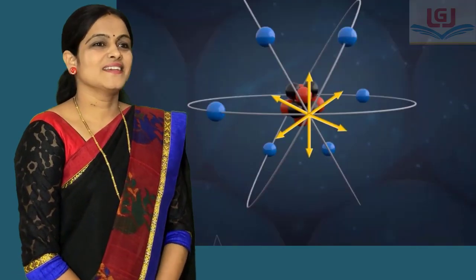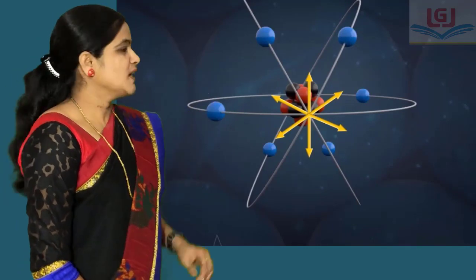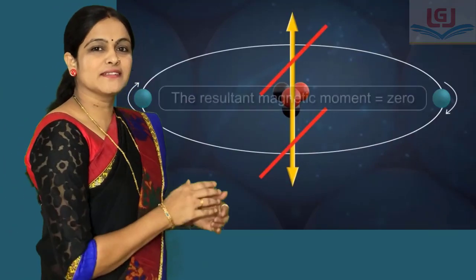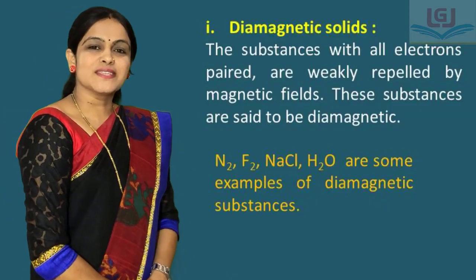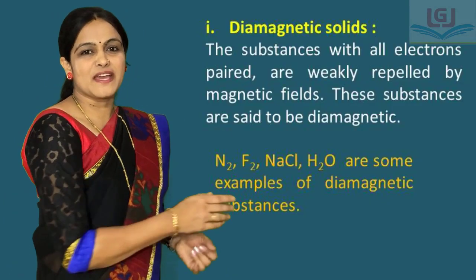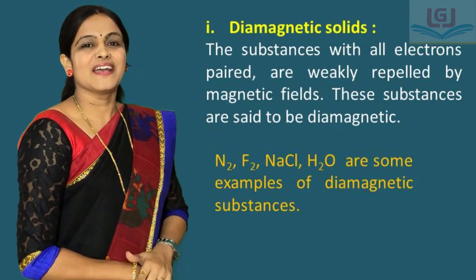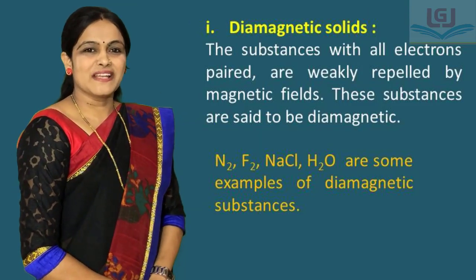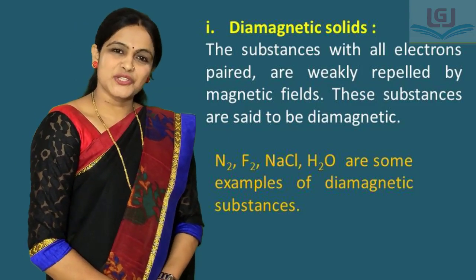First, we discuss diamagnetic solids. In diamagnetic solids, all electrons are paired. Therefore, their spins cancel each other and the vector sum of their magnetic moments is zero. The substances which contain all paired electrons and are weakly repelled by magnetic fields are called diamagnetic substances. For example: N₂, F₂, NaCl, H₂O, etc.